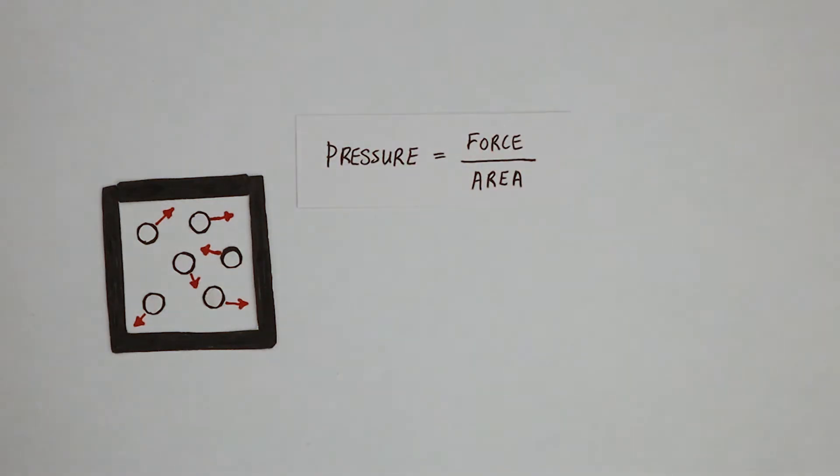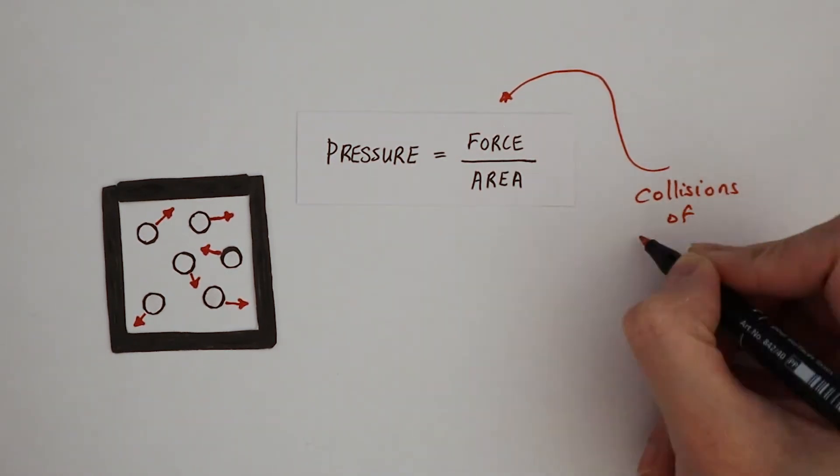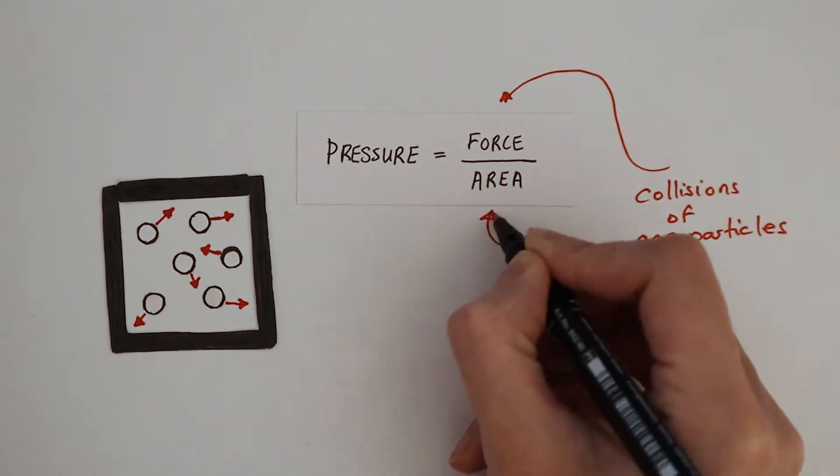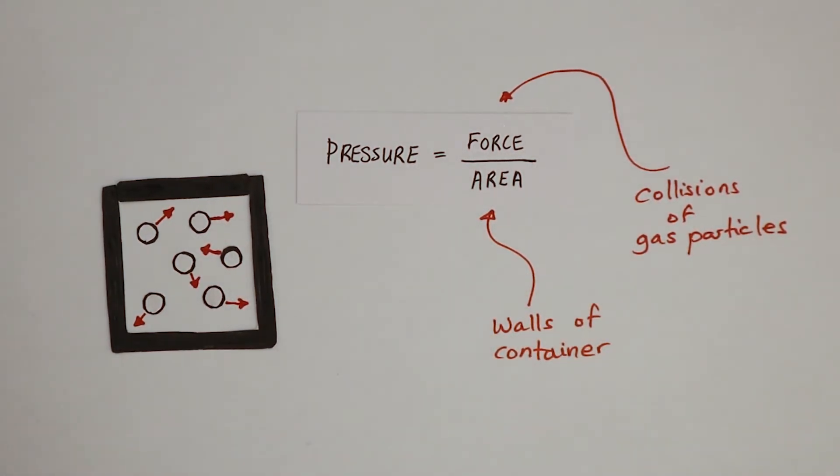Let's look at the equation: pressure is force divided by area. This is the total force due to the collisions of particles on the walls, and that's the area of the container walls. Together, they give the can an internal pressure.